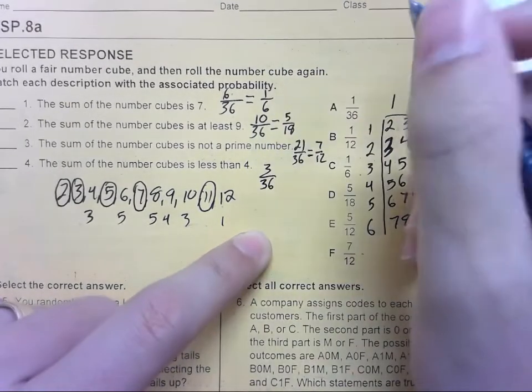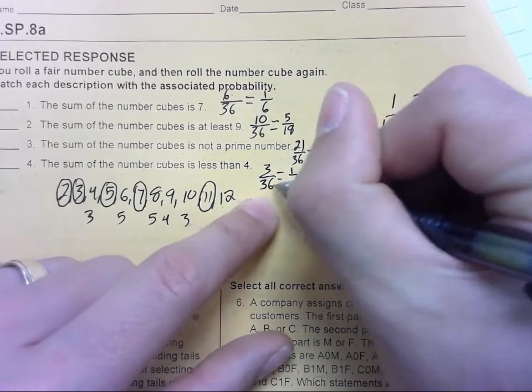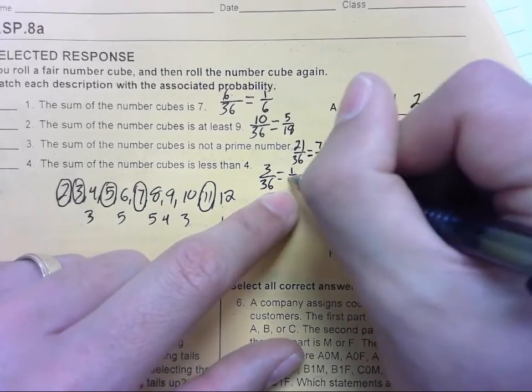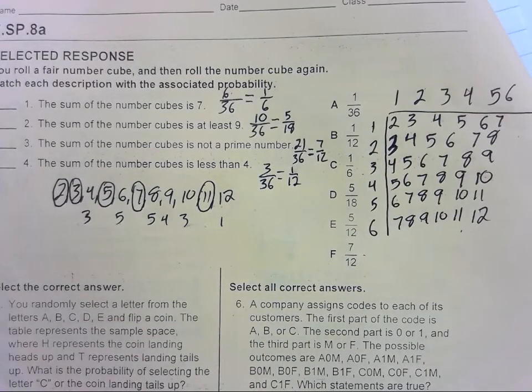We can divide these both by 3. 3 divided by 3 is 1, and 36 divided by 3 is 12. So the answer for 4 is 1/12, which is B.